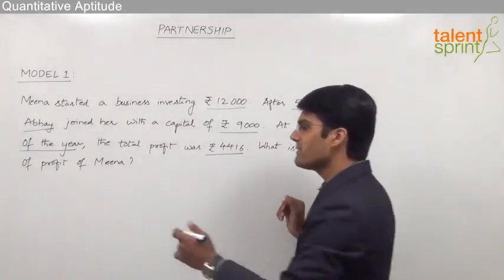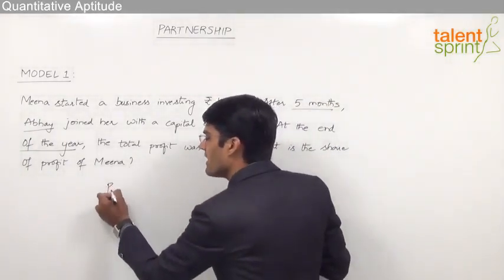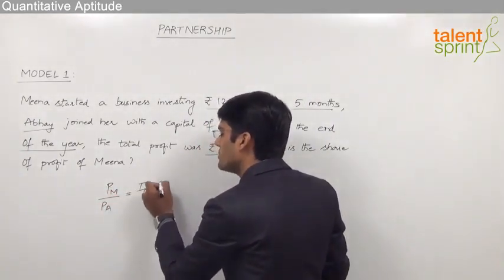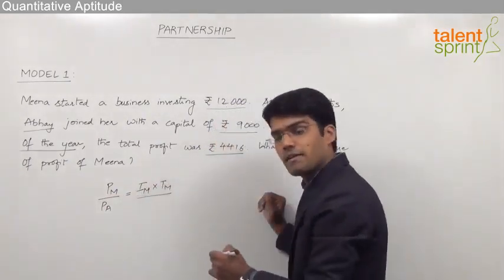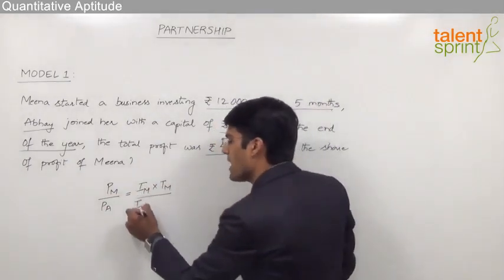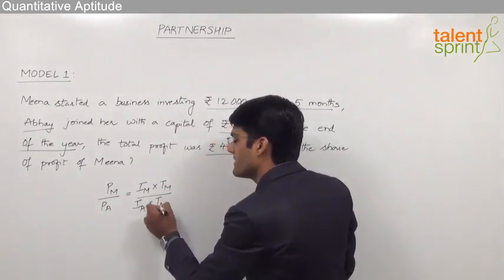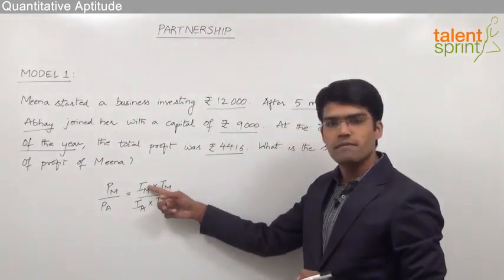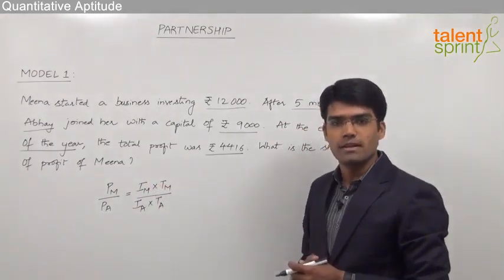Now, as discussed, we know that profit of Meena by profit of Abhay should be taken as investment made by Meena into time of Meena's investment divided by investment of Abhay into time of Abhay's investment. That is, profit of any partner is proportional to his investment into the time of investment.